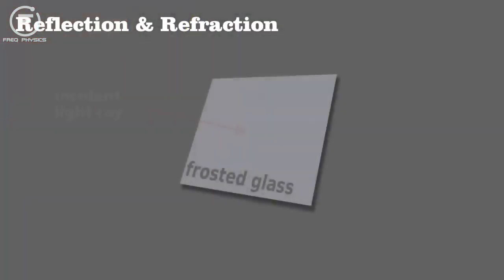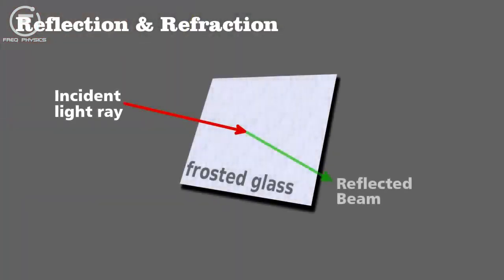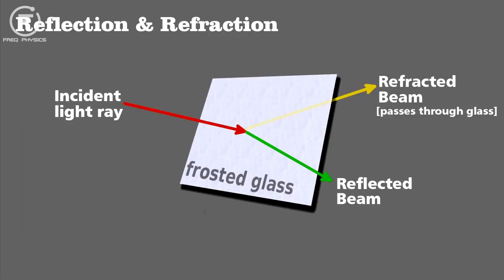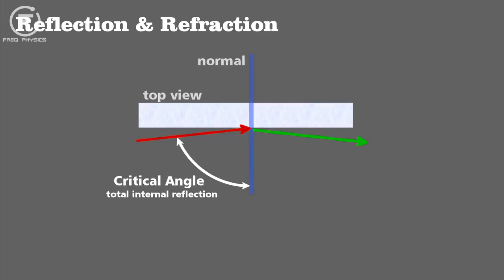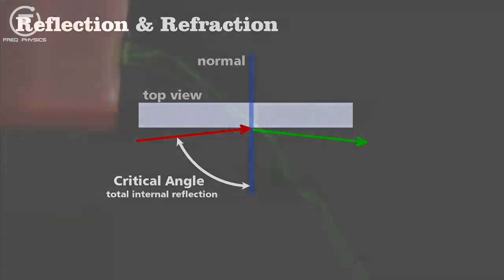Recall that any time light strikes a surface, it can either be absorbed by the material, reflected from it, or pass into and through it. The latter we call refraction. It's easier to see from a top view. Reflection and refraction can happen at the same time, but if a light ray hits the surface at an angle greater than the critical angle, it will be completely reflected and not refracted.